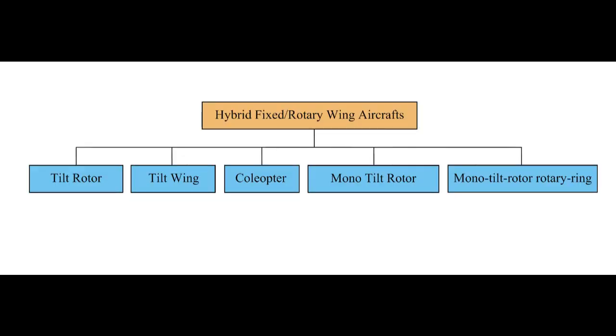Hybrid fixed or rotary wing aircrafts are a group of aircraft that combines features of both fixed wing aircrafts and rotorcrafts.